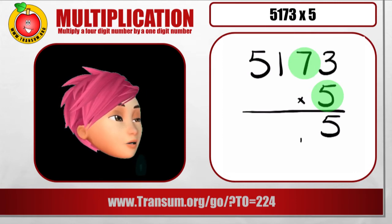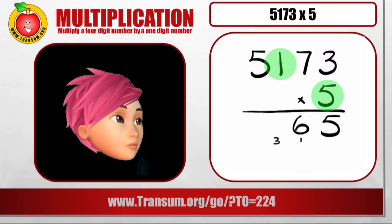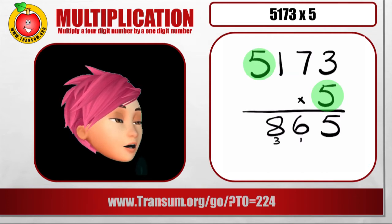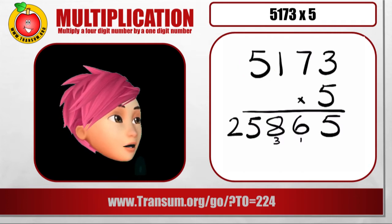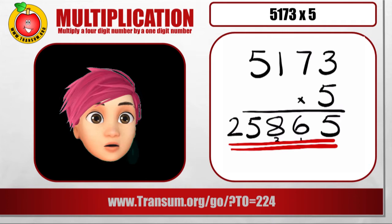Then 5 multiplied by 7 is 35. Add on that 1 makes 36. 5 times 1 is 5 plus that 3 is 8. And then 5 times 5 is 25. Write the 25 at the beginning. 25,865.